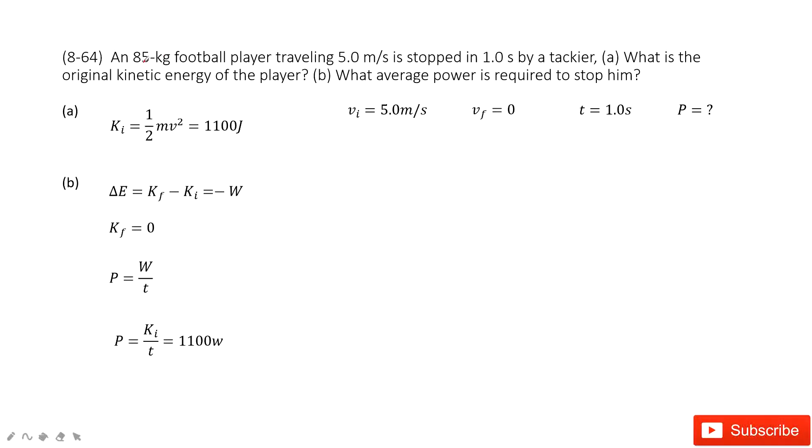You can see, we know the mass of the football player, so mass is given. The initial velocity is 5 m per second, the final velocity is zero because the player is stopped, and time is 1 second. It asks you to find the power.